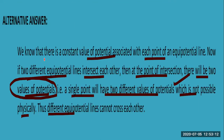This was question number nine, and we had to explain whether equipotential lines can cross each other or not. Because they would have two values at the intersection, it is not physically possible. Thank you very much for your attention.